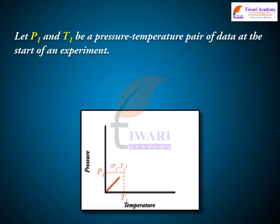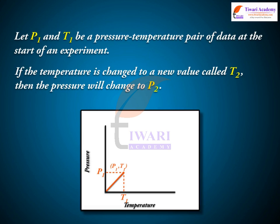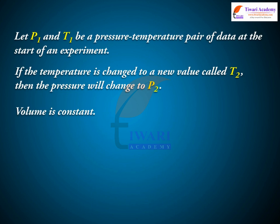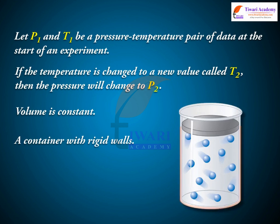Let P1 and T1 be a pressure-temperature pair of data at the start of an experiment. If the temperature is changed to a new value called T2, then the pressure will change to P2. Keep in mind that when volume is not discussed, as in this law, it is constant — that means a container with rigid walls.